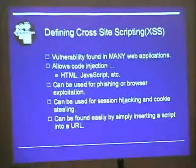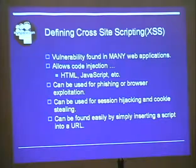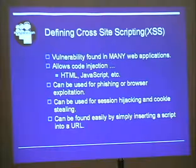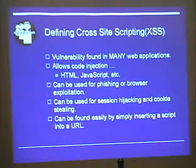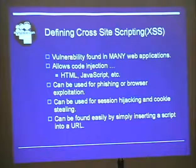Cross-site scripting is a vulnerability that can be found in very many web applications — it's very common. Basically it allows code injection of various sorts: HTML, JavaScript, PHP, anything you need. You can encode it in hex or Unicode and execute it. It can be used for phishing or browser exploitation — you can sometimes execute arbitrary code that would crash a browser. Phishing is a big thing and it's all over MySpace — you go to tons of people's profiles and see it messed up.